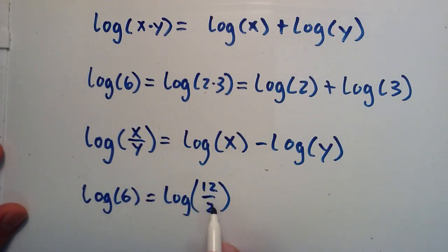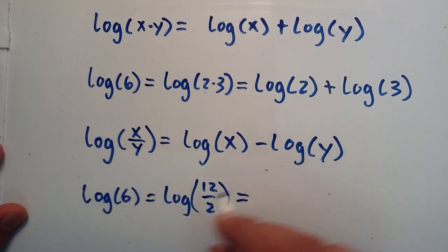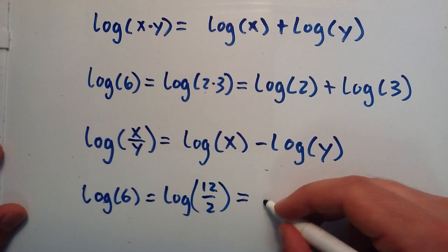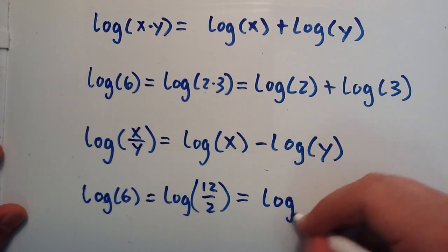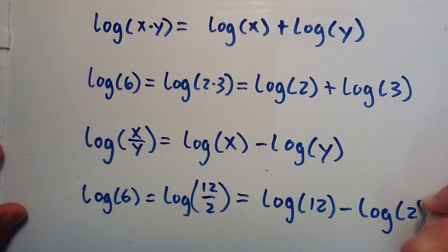So 6 equals 12 divided by 2, so these are exactly the same. And then we're going to use this property right here. And this tells us that the log of 12 divided by 2 is equal to the log of 12 minus the log of 2.